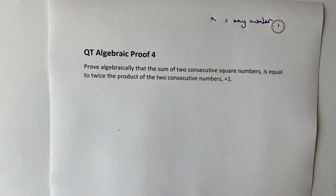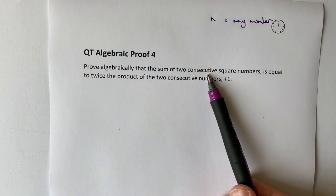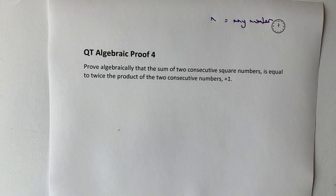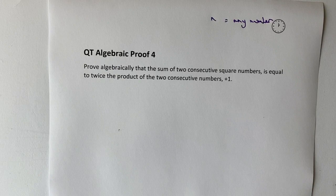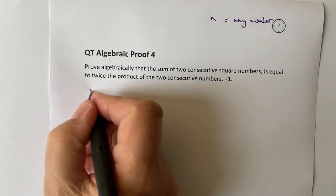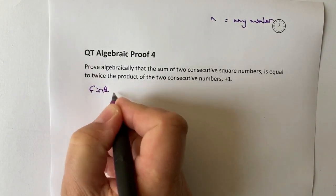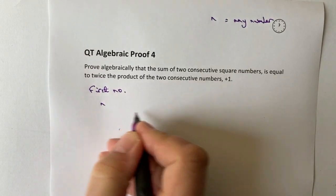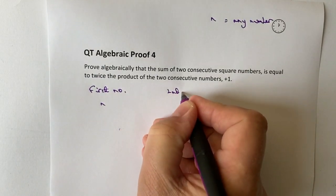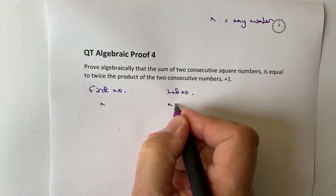So if it's a consecutive number, what we're going to say is that's any number, but any number plus one is going to be the next number along. So therefore I can say that the first number is going to be n and the second number is going to be n plus one.